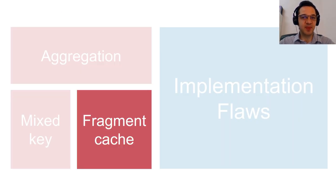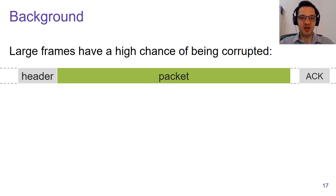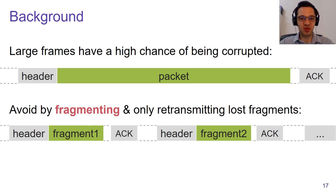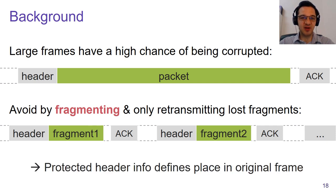The second design flaw is located in the so-called fragment cache of a Wi-Fi device. In Wi-Fi, if you have a large frame, there's a higher chance it will become corrupted, and having to resend the complete frame is inefficient. It's much better to split a large frame into smaller fragments so we can individually re-transmit a fragment if needed. In a protected Wi-Fi network, each fragment is separately encrypted and authenticated, and the Wi-Fi header contains authenticated metadata that defines the place of the fragment in the original frame, allowing the receiver to securely reassemble all fragments.